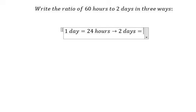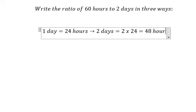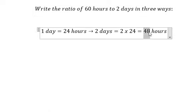So two days, that is 2 multiplied by 24, and we have 48 hours. Then we need to write 60 divided by 48.